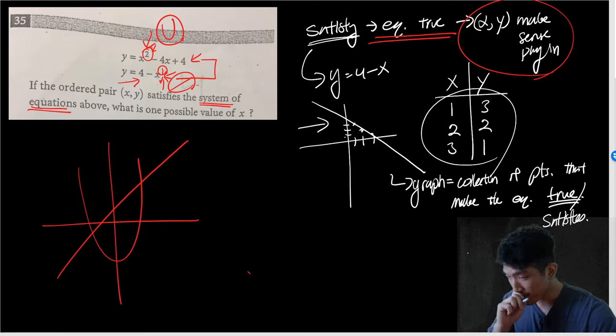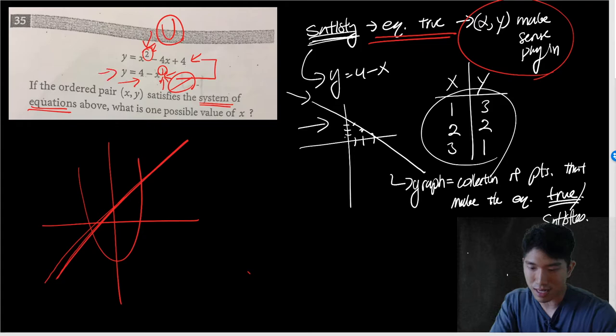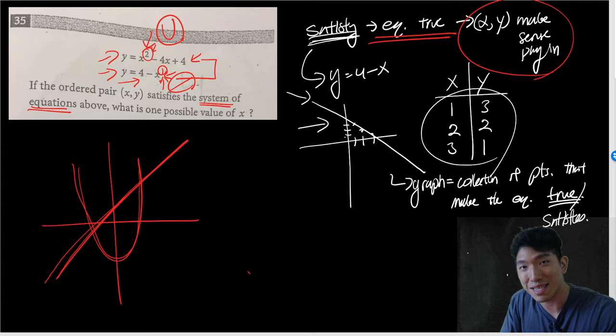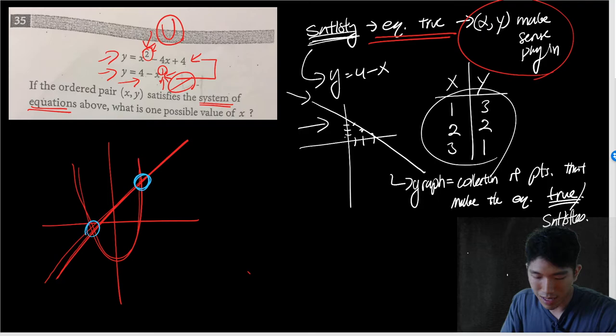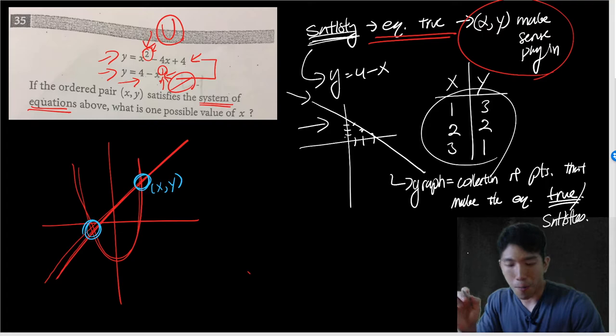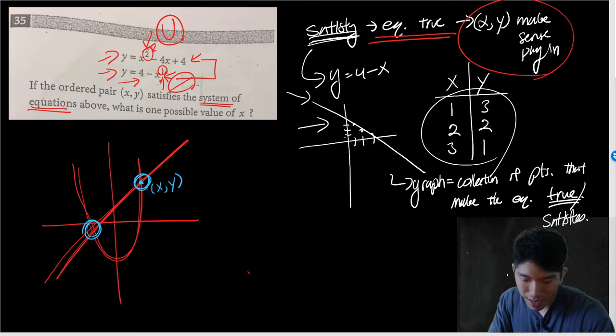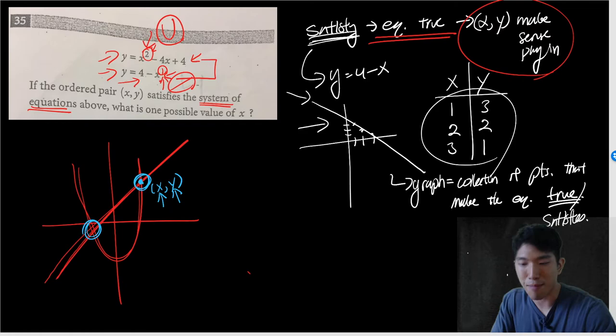Going back — this graph is just a collection of points that satisfy its equation. The red line here represents points that make the second equation true, and the parabola is a collection of points that make the first equation true. If we're looking for something that makes both of these true, that would be exactly where the intersection is — because at the intersection, the parabola and the line share that same point. So when you plug in a certain X value, you get the same Y value for both equations.